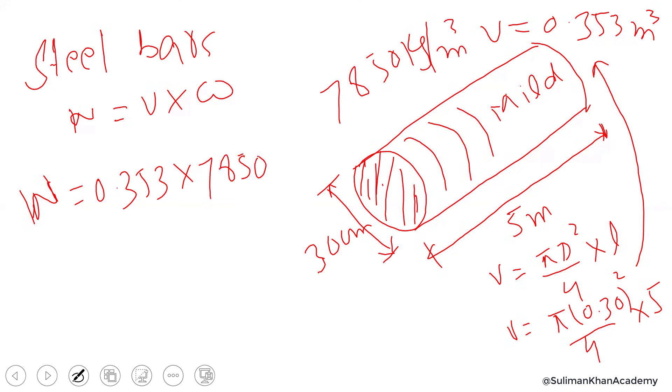You have to google the unit weight of each material. The process is simple: just multiply the volume by 7,850. We get 2,774 kilograms.